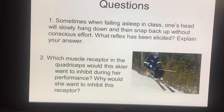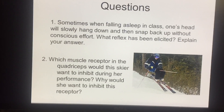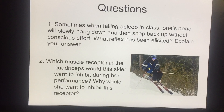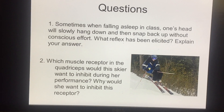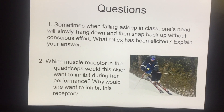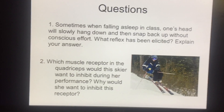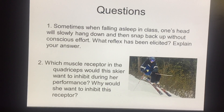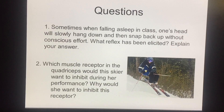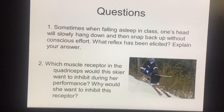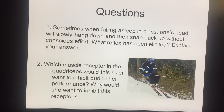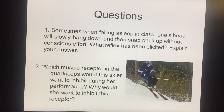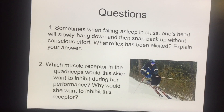The second question had to do with a receptor in the quadriceps that a skier would want to inhibit during her performance, and why. This receptor would be the Golgi tendon organ. If the GTO is activated in the quadriceps, it's going to cause the quadriceps to relax and the hamstrings to contract. If the hamstrings contract on landing, it causes knee flexion and she'll fall. So she would want to override the Golgi tendon organ reflex to keep the quadriceps contracted and prevent excessive hamstring contraction.